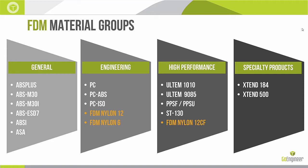We have FDM Nylon 12 and Nylon 6 in the engineering grade category. Then in our high performance category, most well known for the Ultem materials — which have always been our flagship in terms of greatest strength, greatest stiffness, greatest chemical resistance, and most certifications — the newest material in that category, Nylon 12 CF, is in my opinion one of the most exciting materials we now have available in our arsenal.